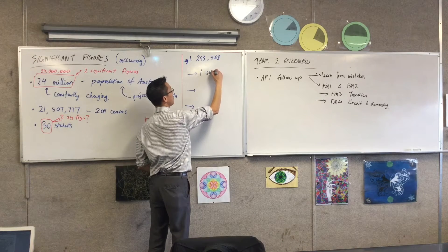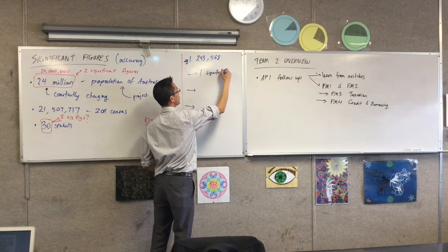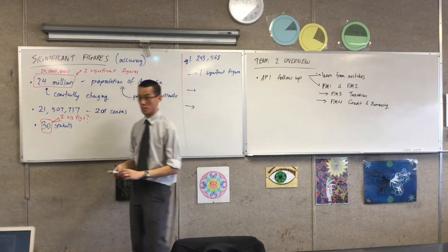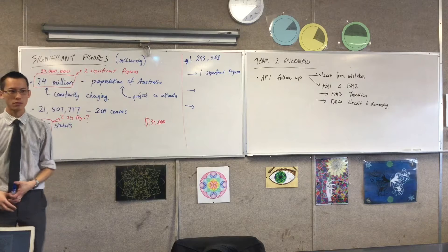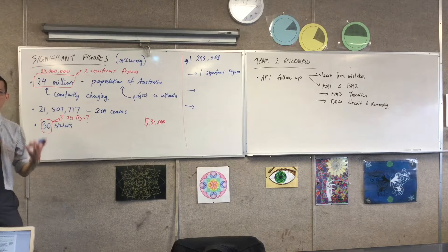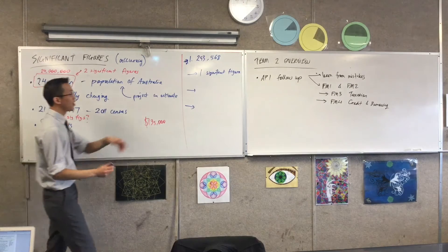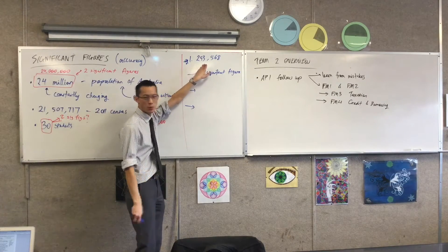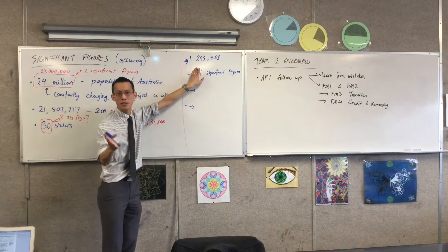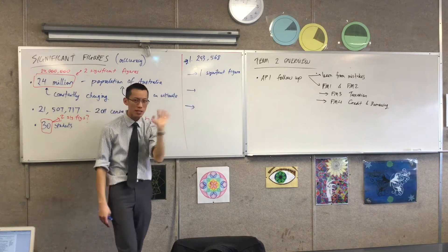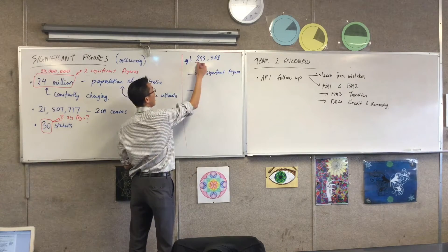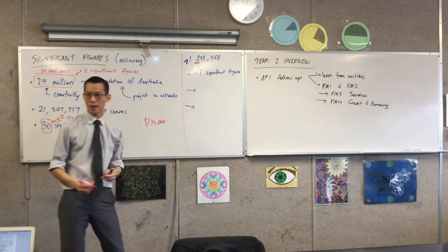So if I want one significant figure — out of the six digits that have been put there, which is the most important number? It's got to be the two. It's the biggest number because even though two is smaller than nine, we have a place value system. So that two really stands for 200,000. So the most significant figure is going to be the first one you see. Maybe you want to highlight it — that's the most important number.